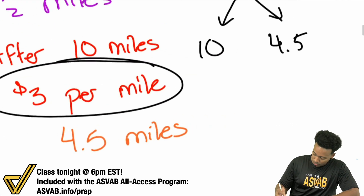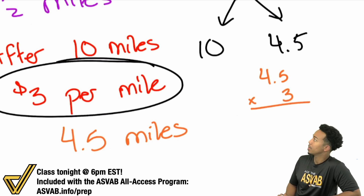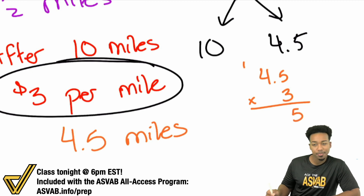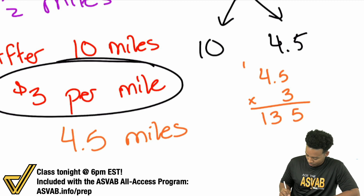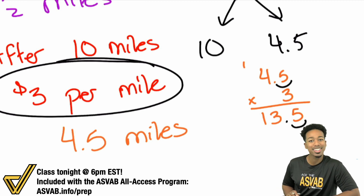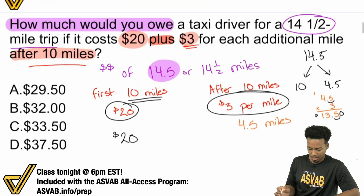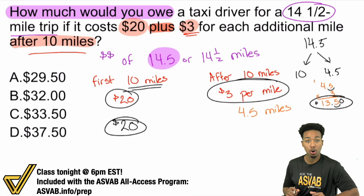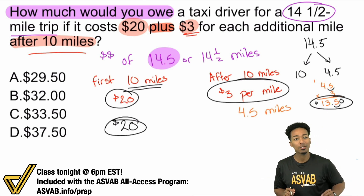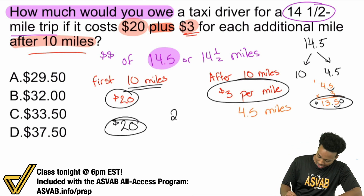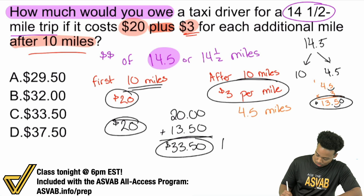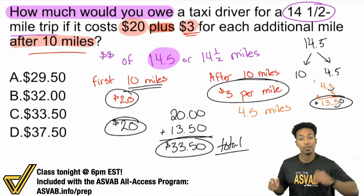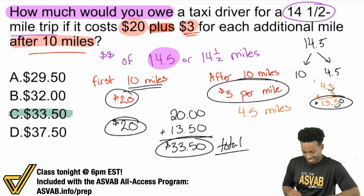So we'll do 4.5 multiplied by $3 per mile. Four point five times three: 5 times 3 is 15, 4 times 3 is 12, add the 1 is 13 — and we have one decimal place, so that's $13.50 extra. Now, we have $13.50 and $20. That's how much we got charged: $20 for the first 10 miles and $13.50 for the extra. So 20 plus $13.50 gives us $33.50 total — that's the total charge for the 14 and a half mile trip. The correct answer is choice C.